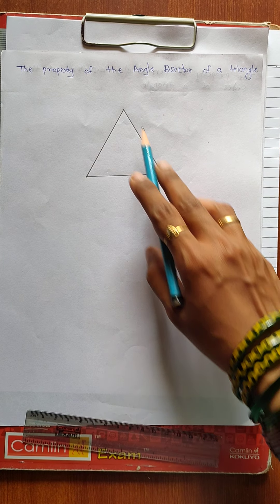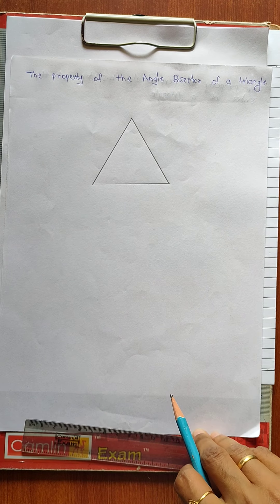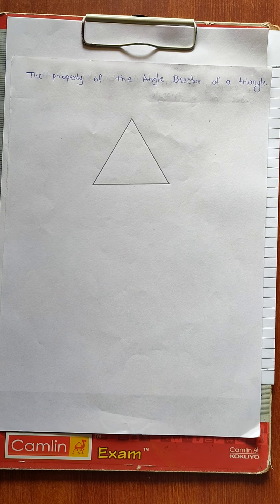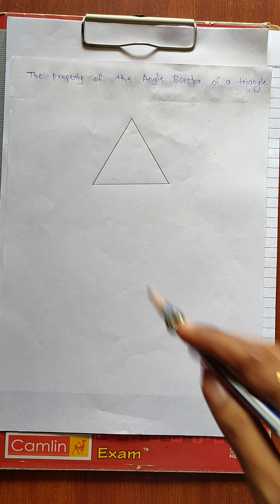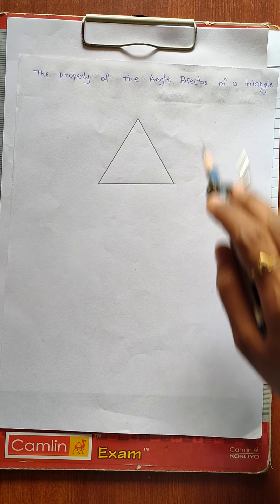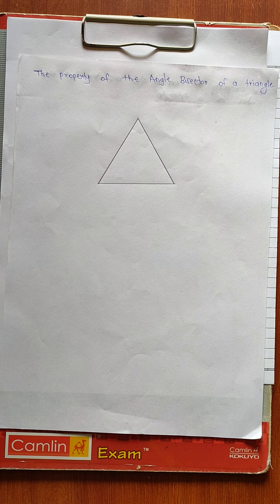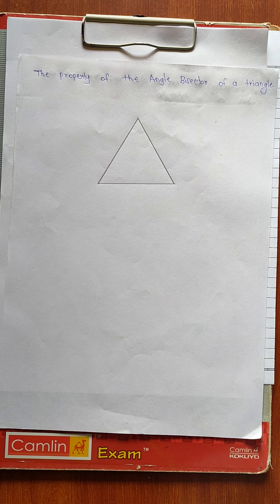All the angles are less than 90 degrees, so this becomes an acute angled triangle. Now we have to draw angle bisectors of the triangle. Angle bisector means all the angles are bisected. Bisected means to make two equal parts — two halves of the given angle.